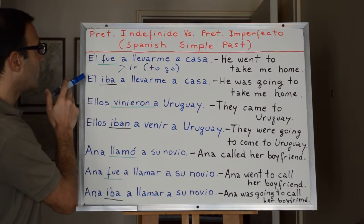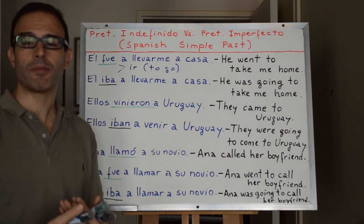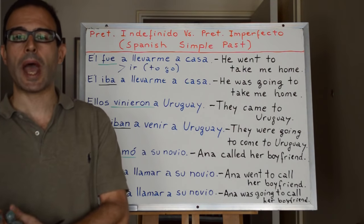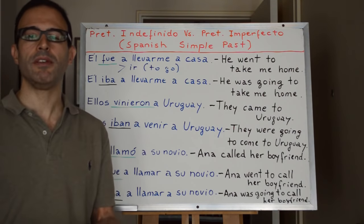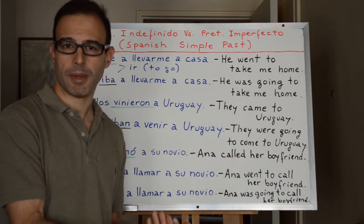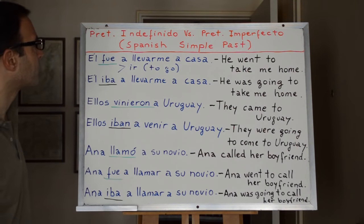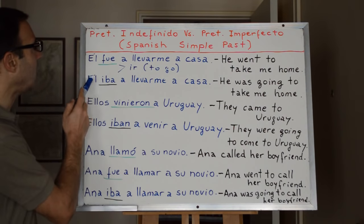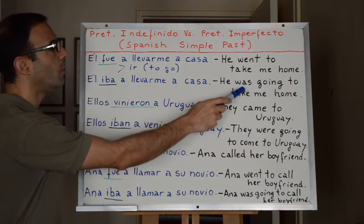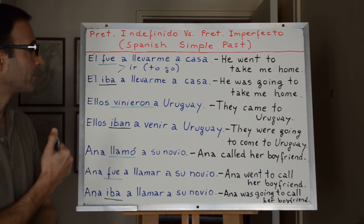The second one suggests that something was going to happen but eventually may have not. Él iba a llevarme a casa — he was going to take me home.